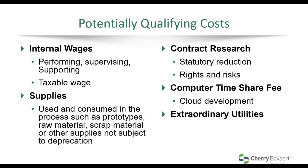The third category is contract research — paying a third-party contractor or consultant to do qualifying activities for your company. You can pick up about 65% of payments made to contractors. Key requirements: you must own the rights to the research — the contract language must specify you own the intellectual property — and you must demonstrate that the economic risk is on the company claiming the credit.